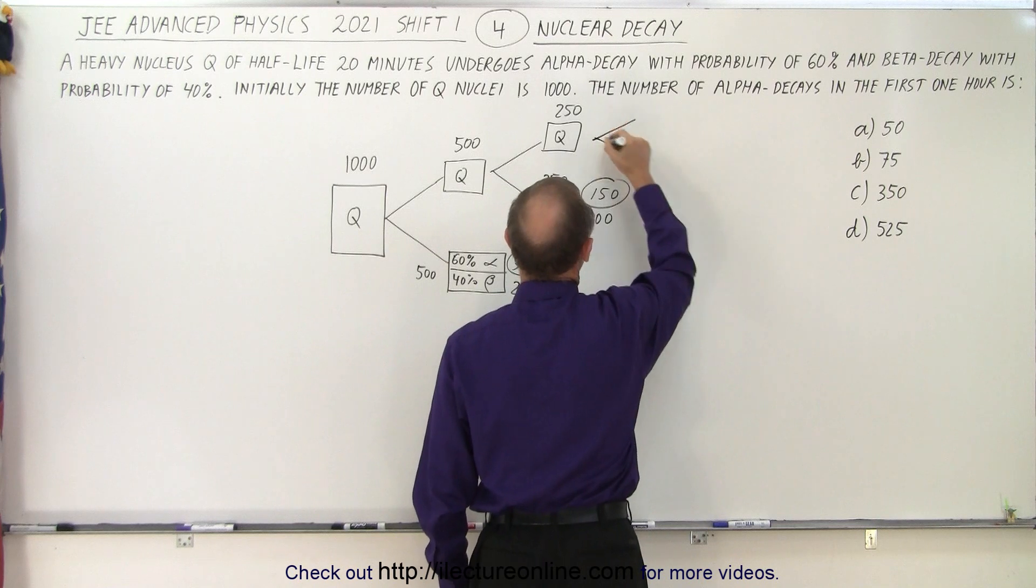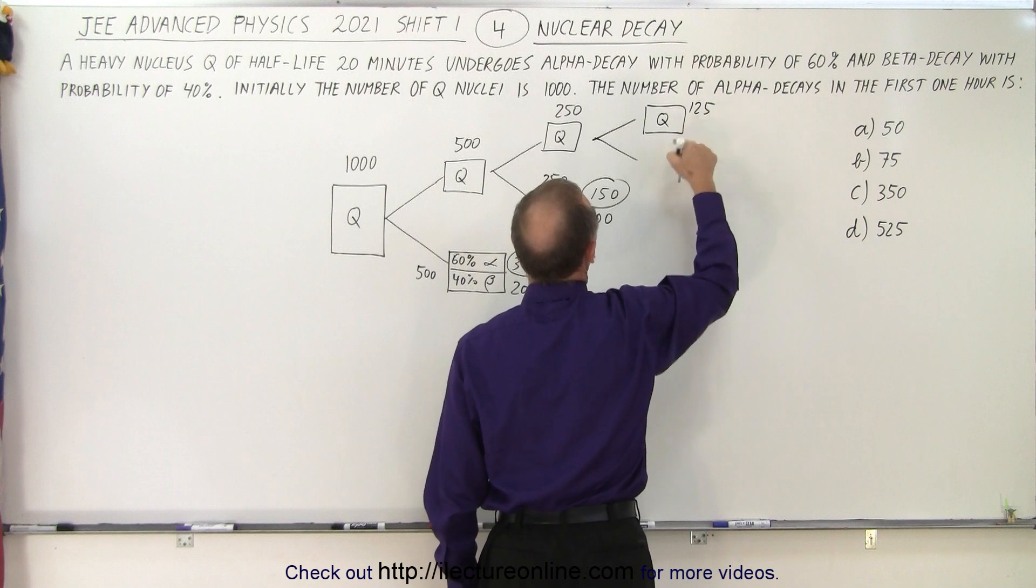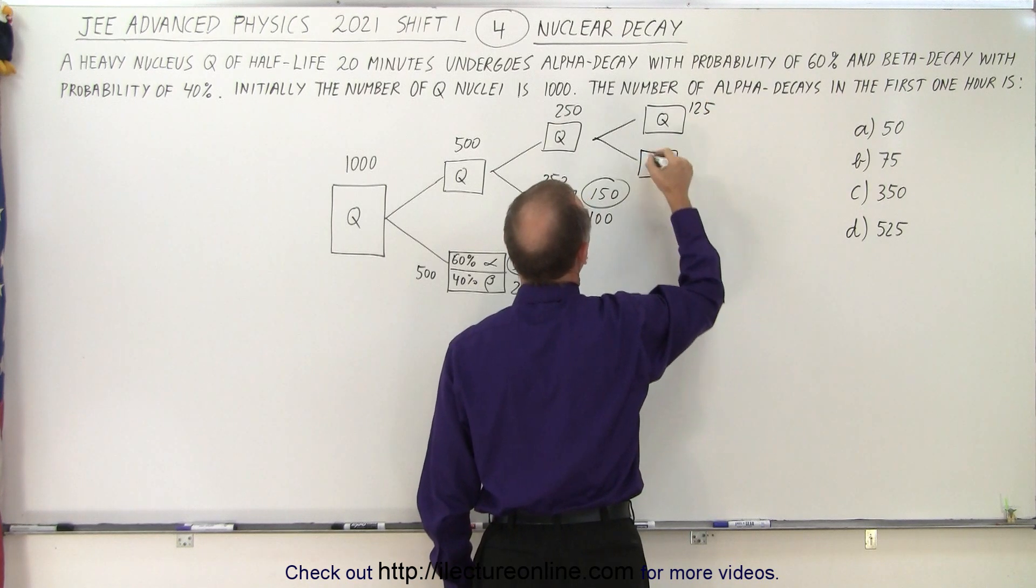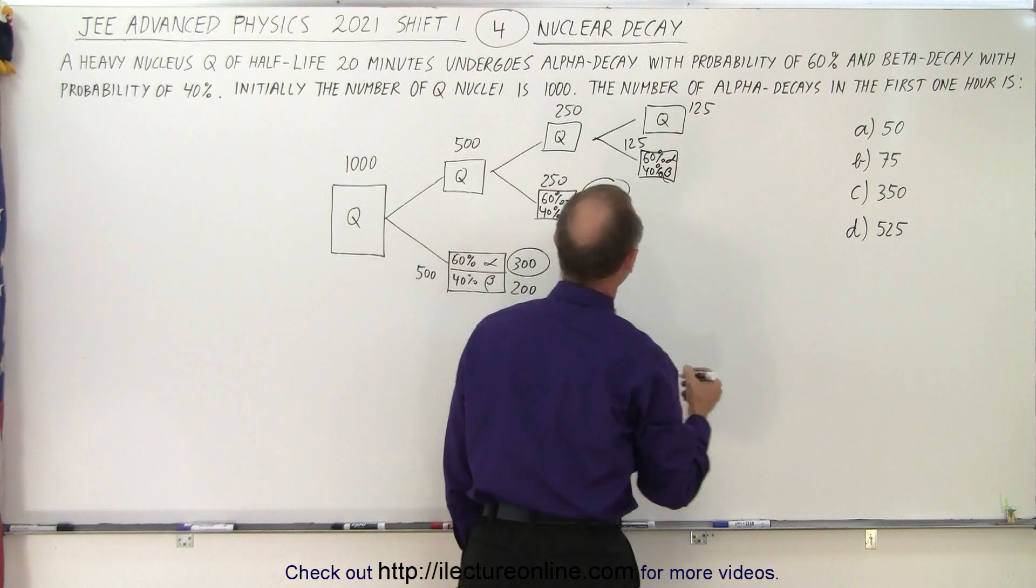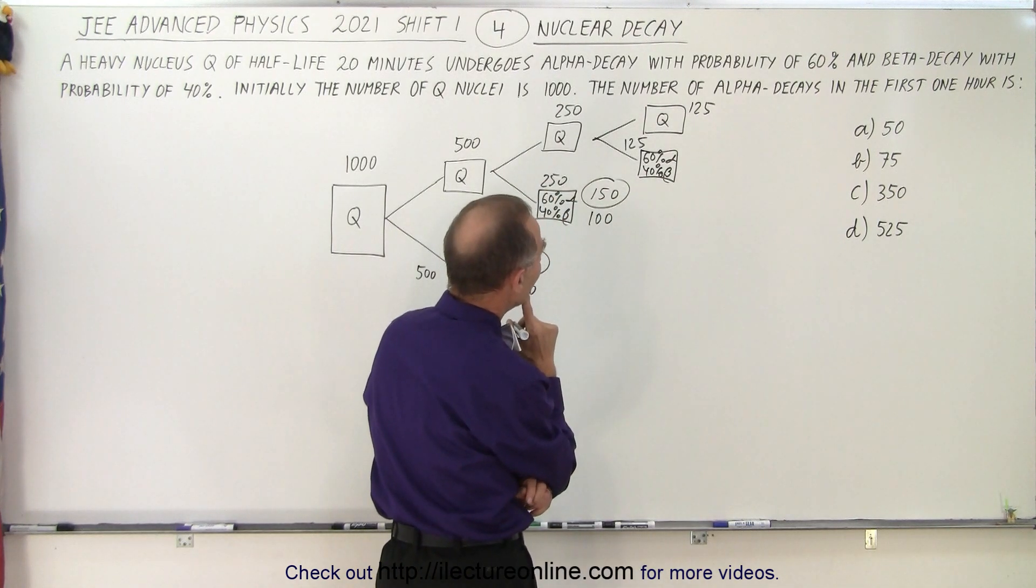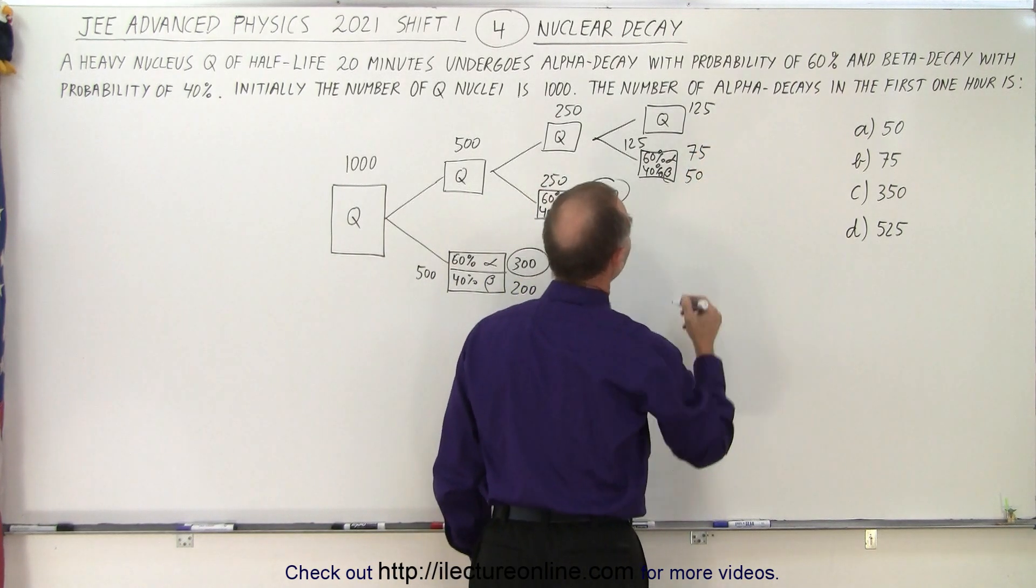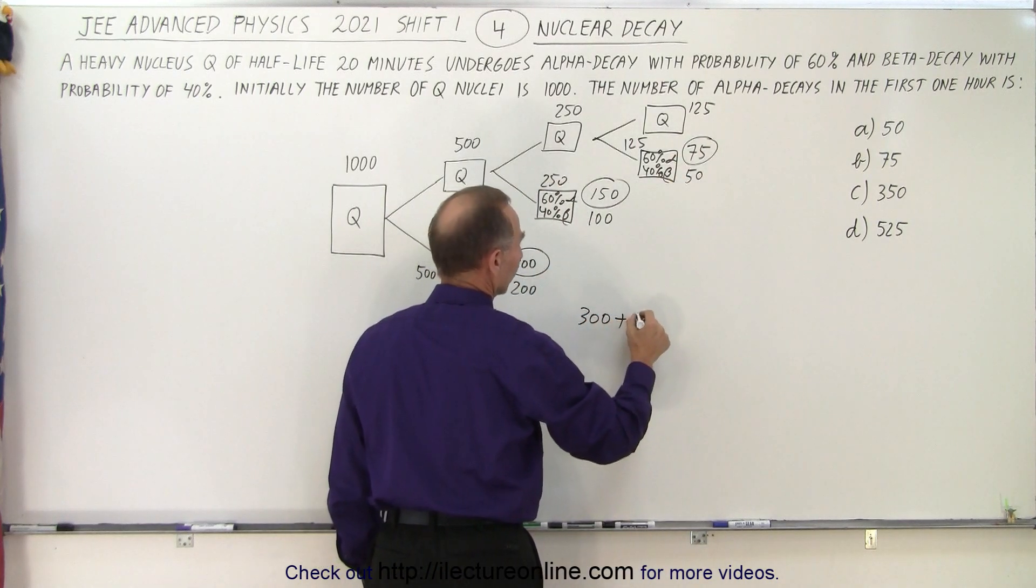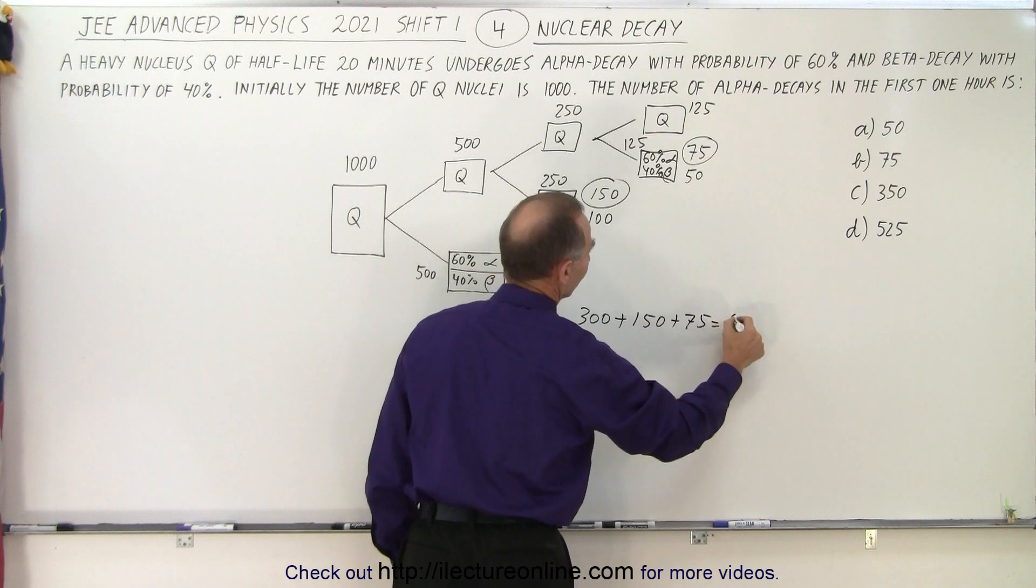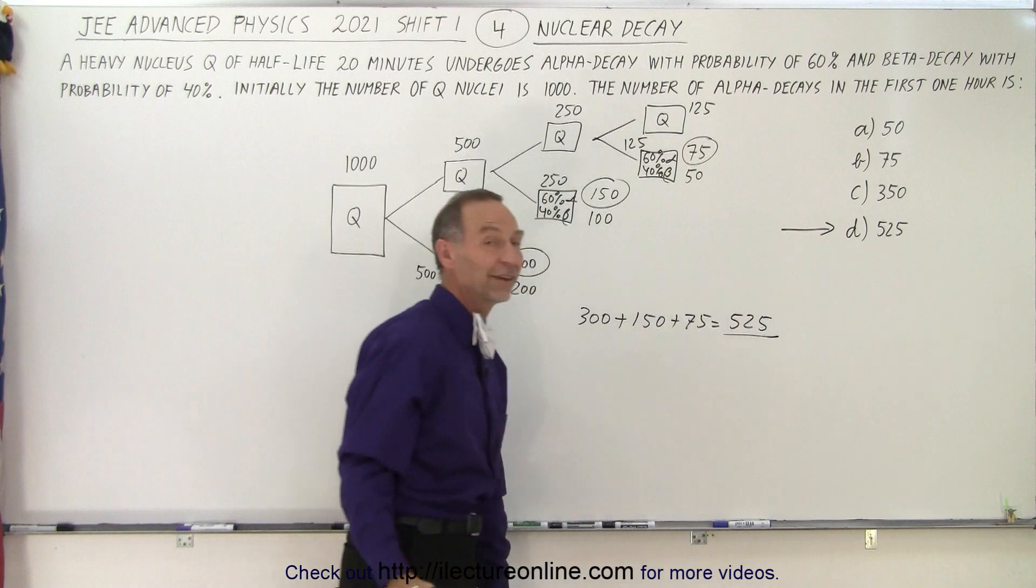One more half-life, that means we're going to have 125 that are still Q nuclei and the other 125 will have decayed with 60% alpha decay and 40% beta decay. What is 60% of 125? That's 75, and that leaves us with 50 beta decays. So we add up another 75, so we get 300 plus 150 plus 75, adds up to 525. Clearly the correct answer is D.